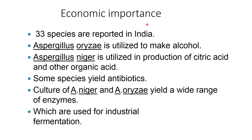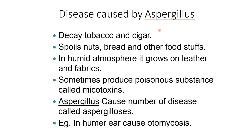Economic importance of Aspergillus: there are 33 species reported in India. Aspergillus oryzae is utilized to make alcohol. Aspergillus niger is utilized in the production of citric acid and other organic acids. Some species yield antibiotics. Cultures of Aspergillus niger and Aspergillus oryzae yield a wide range of enzymes which are used for industrial fermentation.